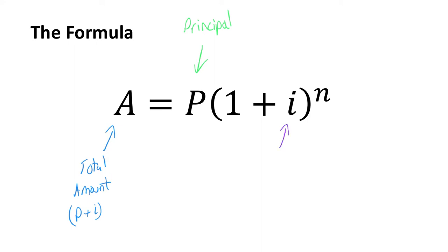I is going to be your interest rate, but it's important to remember that it's your interest rate per period. That's a really important part of getting the calculation correct, because you're not always going to be compounding annually, and you're normally always given the interest rate per annum. So if you're compounding quarterly, monthly, or daily, you need to make sure you include the interest rate per period. We'll look at how to make that adjustment in the examples.